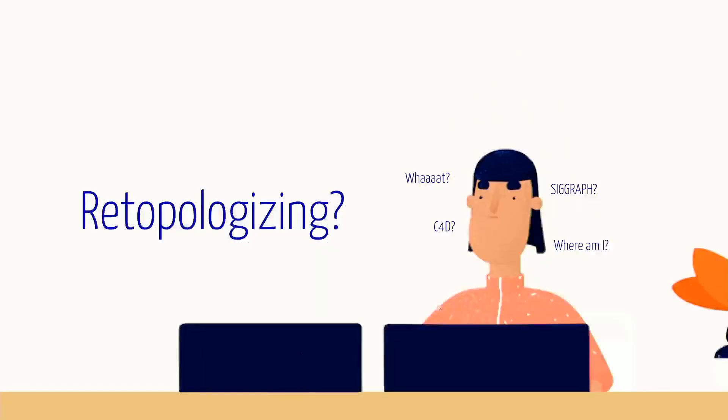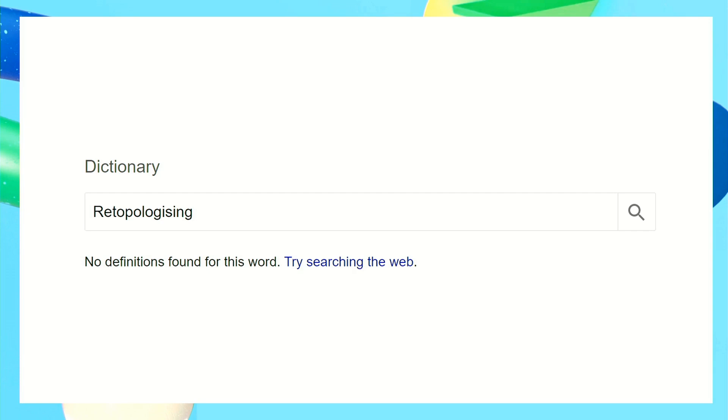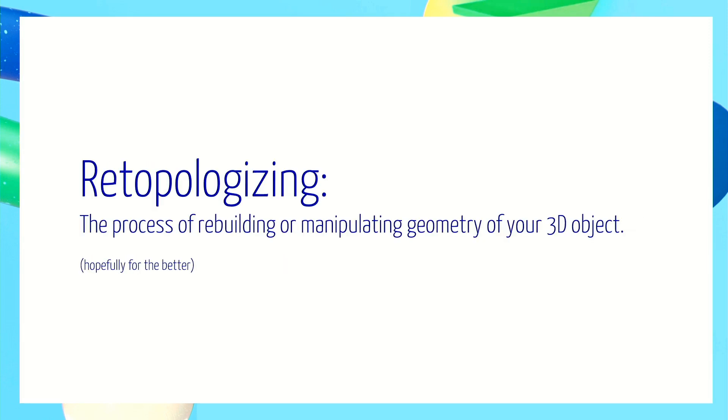Today I'm going to talk a lot about modeling for character animation in Cinema 4D. I've been modeling for a couple of years now — lots of characters, retopologizing, modeling, all kinds of stuff. I want to talk through a few of my tips and tricks that I've learned along the way. I really hope you know what retopologizing is because some people don't. The dictionary does not know what retopologizing means. Retopologizing is the process of rebuilding or manipulating the geometry of your 3D object — and hopefully for the better.